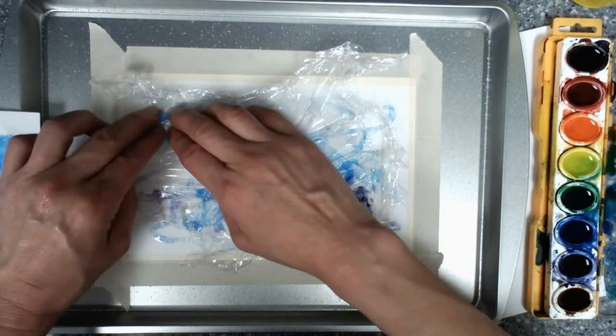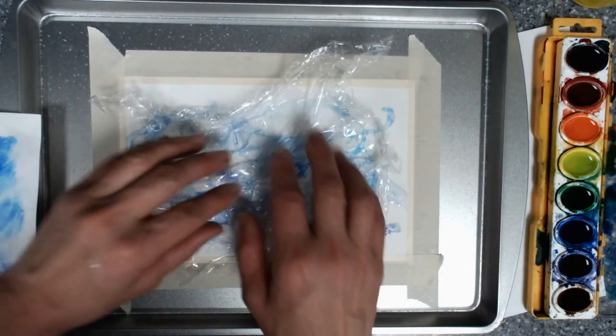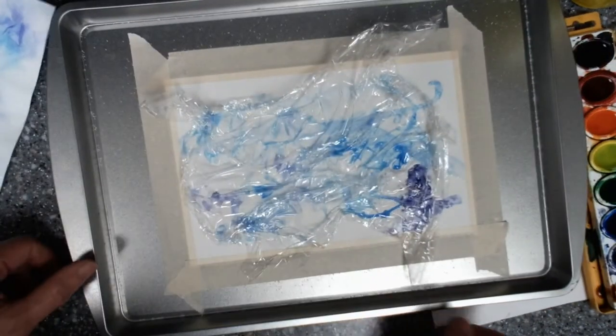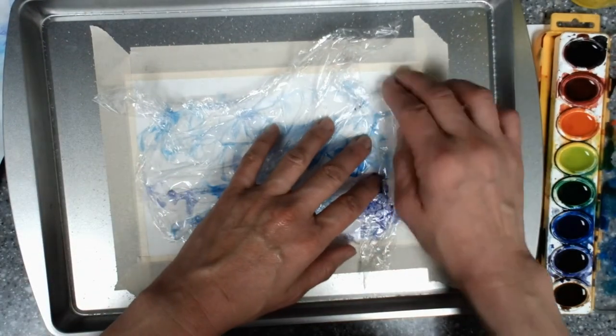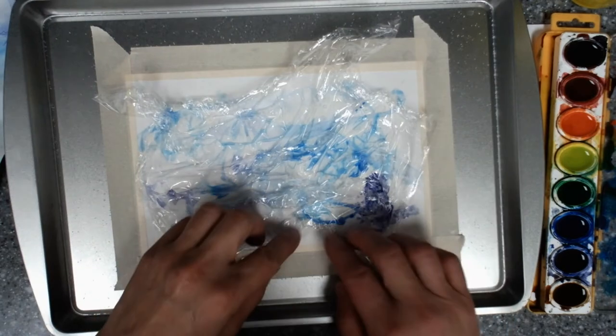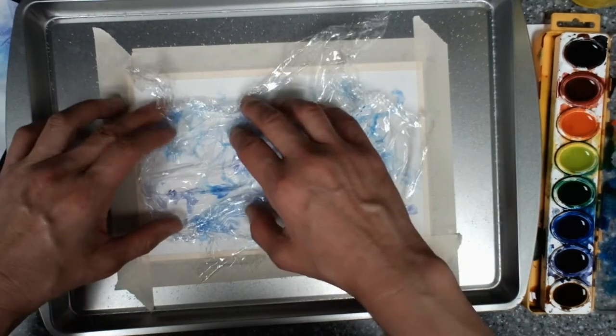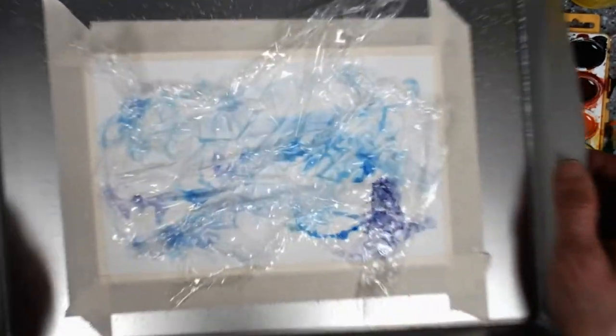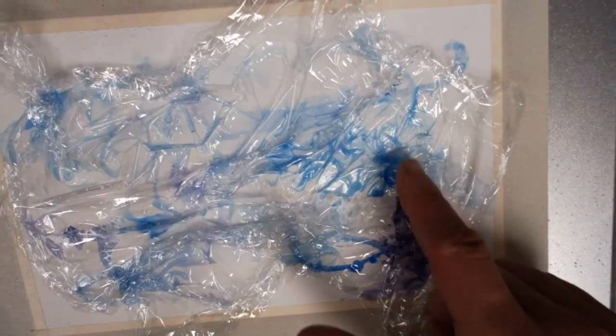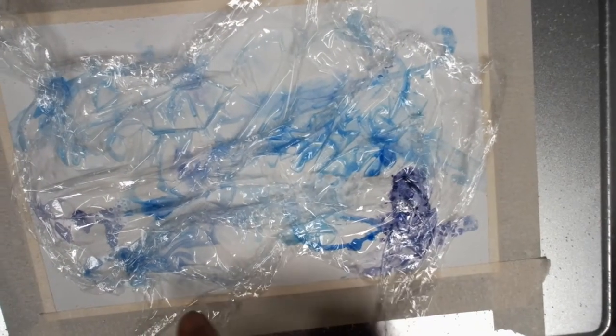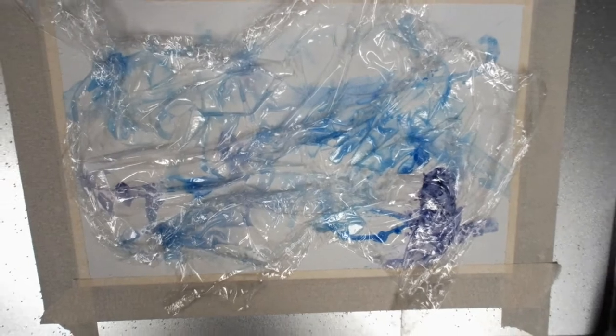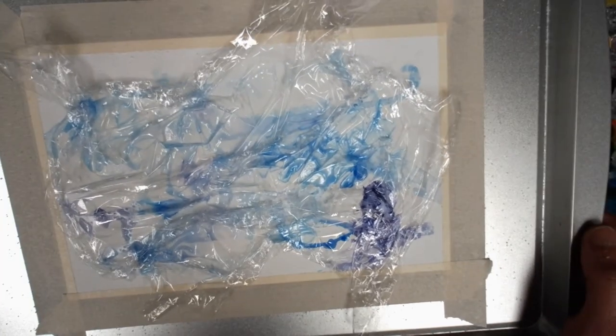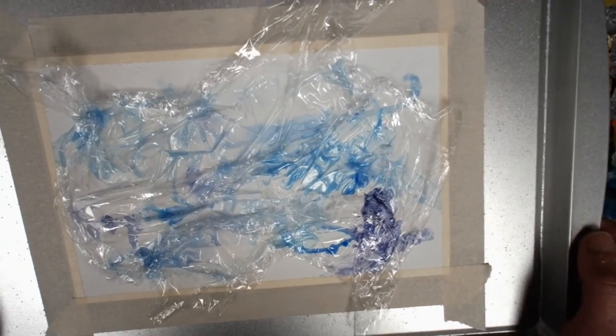So once you get it situated how you want it to be, you can take a look at it. You want to let this completely dry before you take it off. And that will create a texture that actually does look like ice. As you can see, the paint kind of gets pulled up in some of the creases. And it looks a little bit like ice right now actually. And you let that dry completely before taking it off.